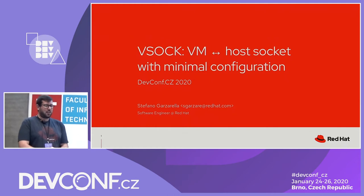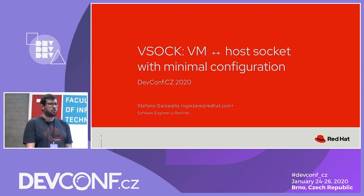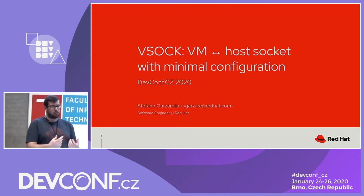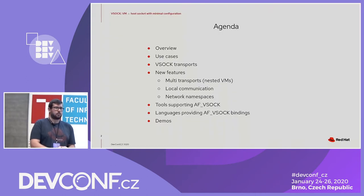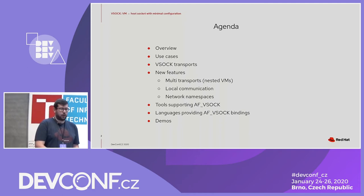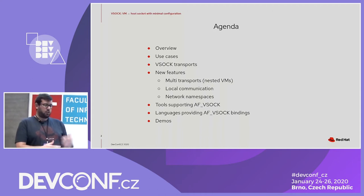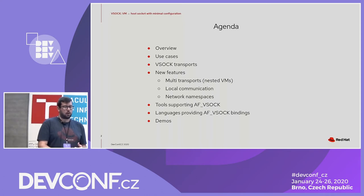This is the agenda of the talk. First of all, we will have an overview of VSOCK and look at some use cases. Then we'll take a look at implementation details, including some transports that implement the communication channel between the host and the guest. We will see new features such as multiple transport, local communication, and network namespace support. Finally, we'll look at tools and languages that support VSOCK socket. During the presentation, we'll have some short demos to understand better how to use VSOCK.